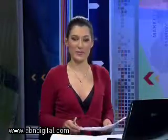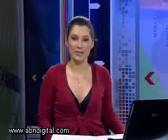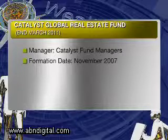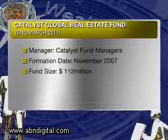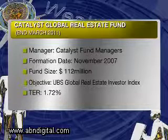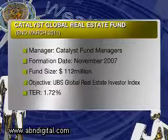Now we focus on a specific fund — the Catalyst Global Property Fund. It's a fund worth $112 million, which is great for a South African fund manager in terms of assets under management. The fund is managed by Omraan Ismail, who is also chief investment officer for Catalyst Fund Managers, co-managed with Jamie. The formation date is November 2007 and the objective is benchmarked against the UBS Global Real Estate Investors Index. The total expense ratio is about 1.7%, which is not expensive at all.